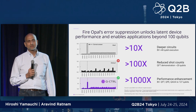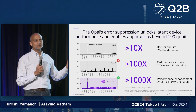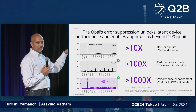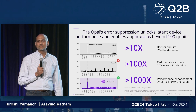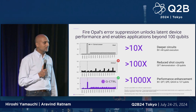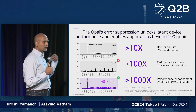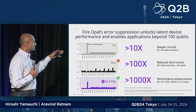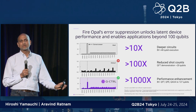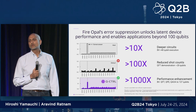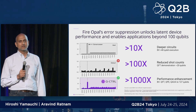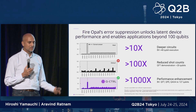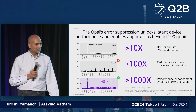Talking about the Grover search problem I had shown previously, where the default system performance is noisy, Q-CTRL software transforms that and you get the right answer typically within the first few attempts. With minimal overhead on the system, this results in more efficient execution.